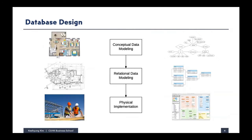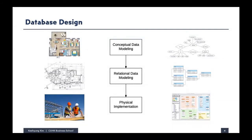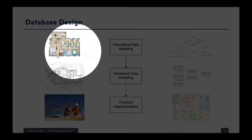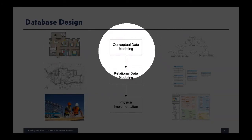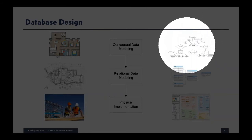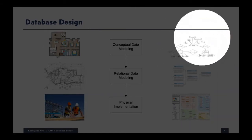Database design involves three steps. The first is conceptual data modeling. Think of it like planning a house — you don't build right away; you first design a floor plan. You think about how many rooms, toilets, and how big the living room should be. Similarly, in conceptual data modeling, as an outcome you produce an entity relationship diagram. Today we are going to talk about how to do conceptual data modeling to make an entity relationship diagram.